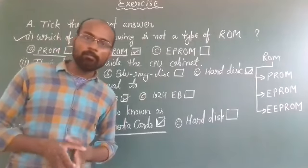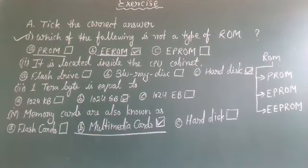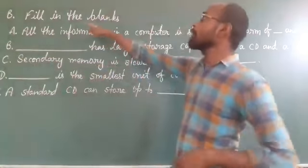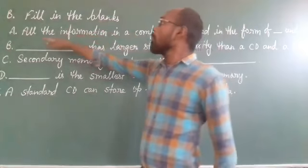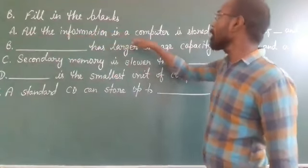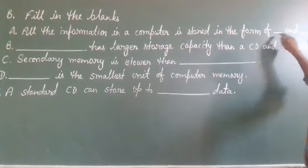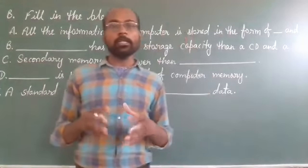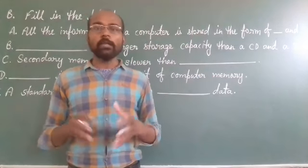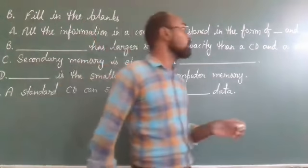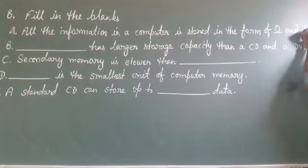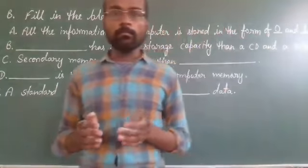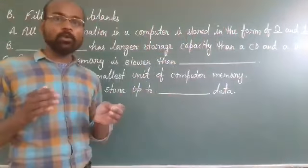Now come to exercise number B, which is fill in the blanks. Question number 1 is: all the information in a computer is stored in the form of blank and blank. Students, as you all know, all the information in a computer is stored in the form of 0 and 1 — that is, binary digits.